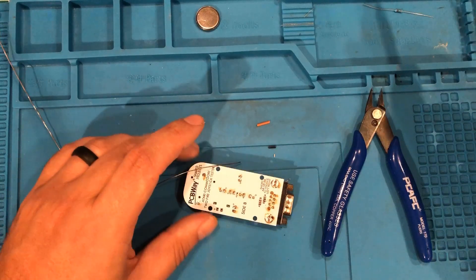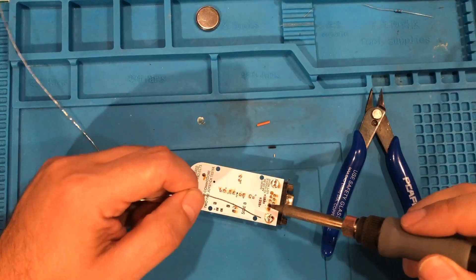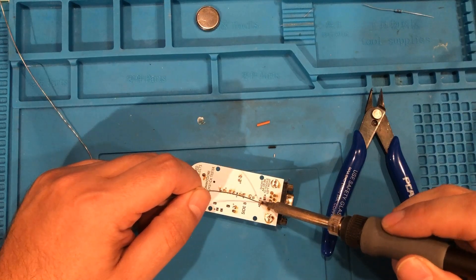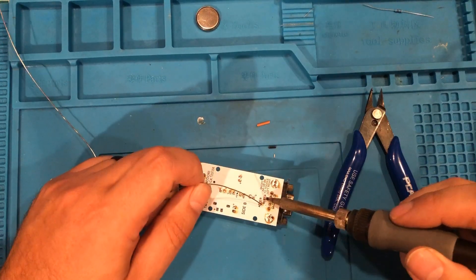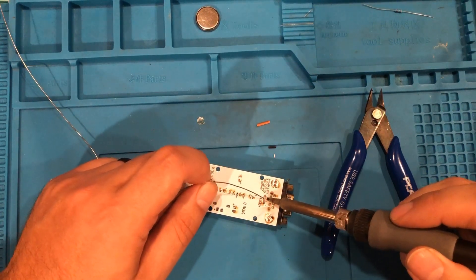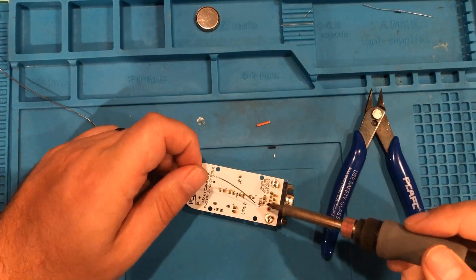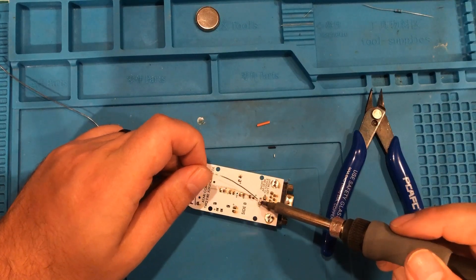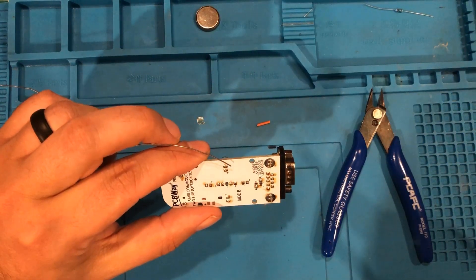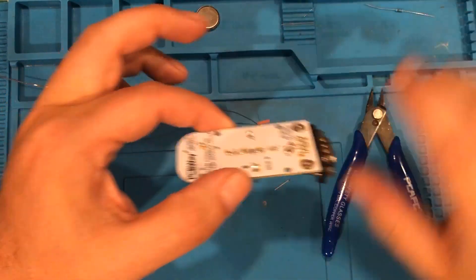And last but not least, we need to come in here and attach these little pads together to each other. We're going to go ahead and tin one, tin the other, tin one, tin the other, and then we're going to bridge them. Well, that one actually already bridged, so let's just come in here and bridge that. And that looks pretty dang good.